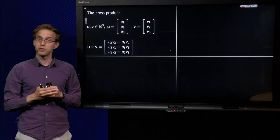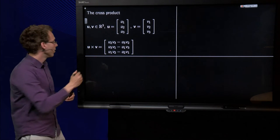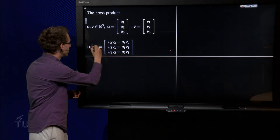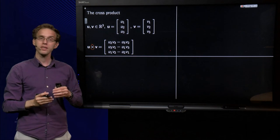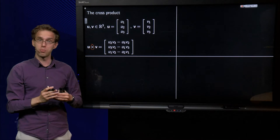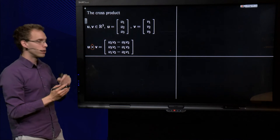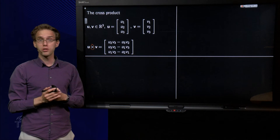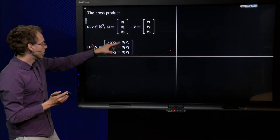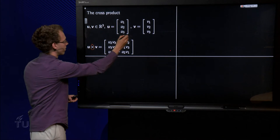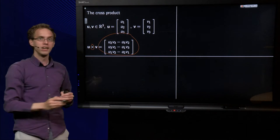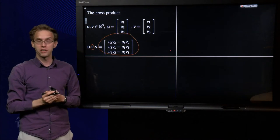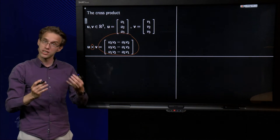Why is it called the cross product? That's due to the cross symbol, in contrast to the inner product or dot product where there was a dot. The cross product is also sometimes called the vector product, because the outcome is a vector, in contrast to the inner product where the outcome was a scalar.